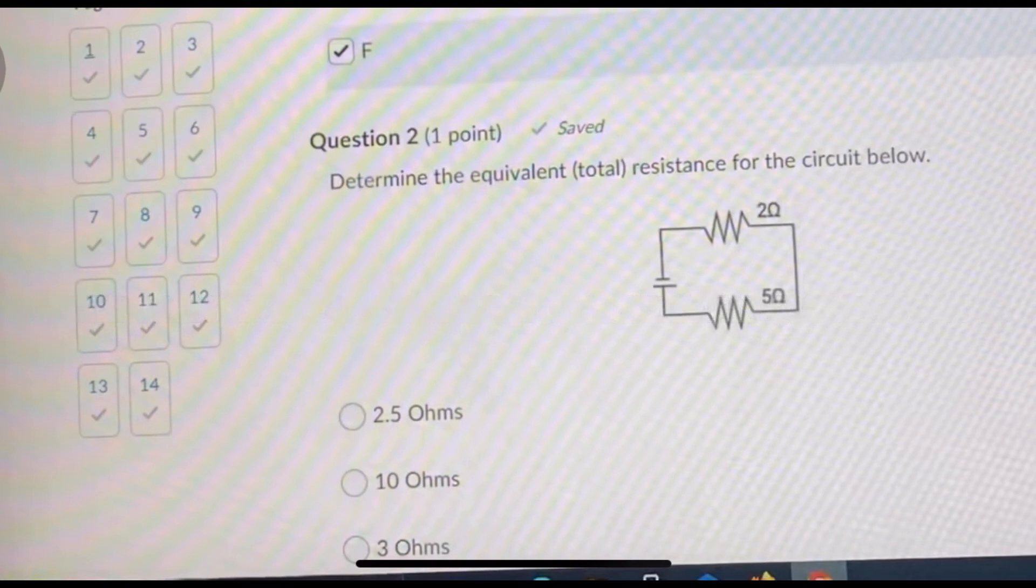Number two is asking for the equivalent total resistance for the circuit below. In a series circuit you can get total resistance, you can get total voltage, but you cannot get a total current. Your current is going to be the same throughout your series circuit. So whatever your current is at one point is what it's going to be throughout.